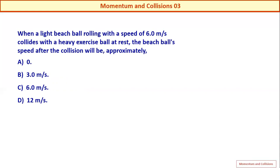This is the third condition for collision between a light and heavy particle. The light beach ball rolls at 6 m/s and strikes a heavy ball at rest. After collision, the light ball will go back in the reverse direction with approximately the same speed of 6 m/s, but the direction is opposite.